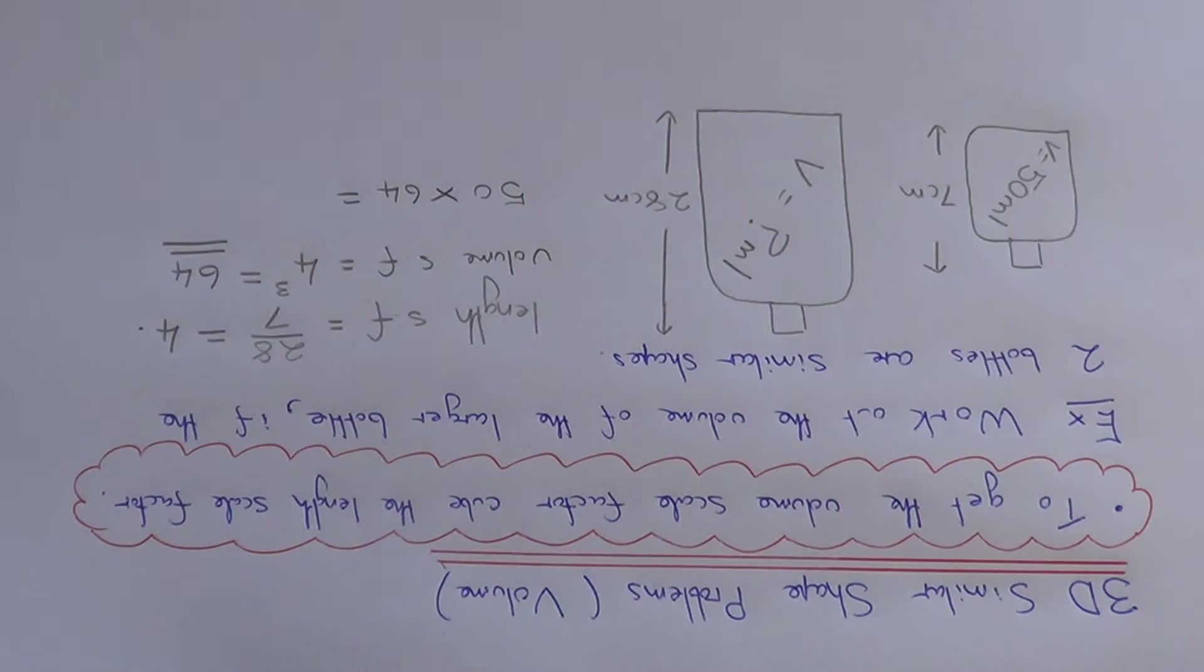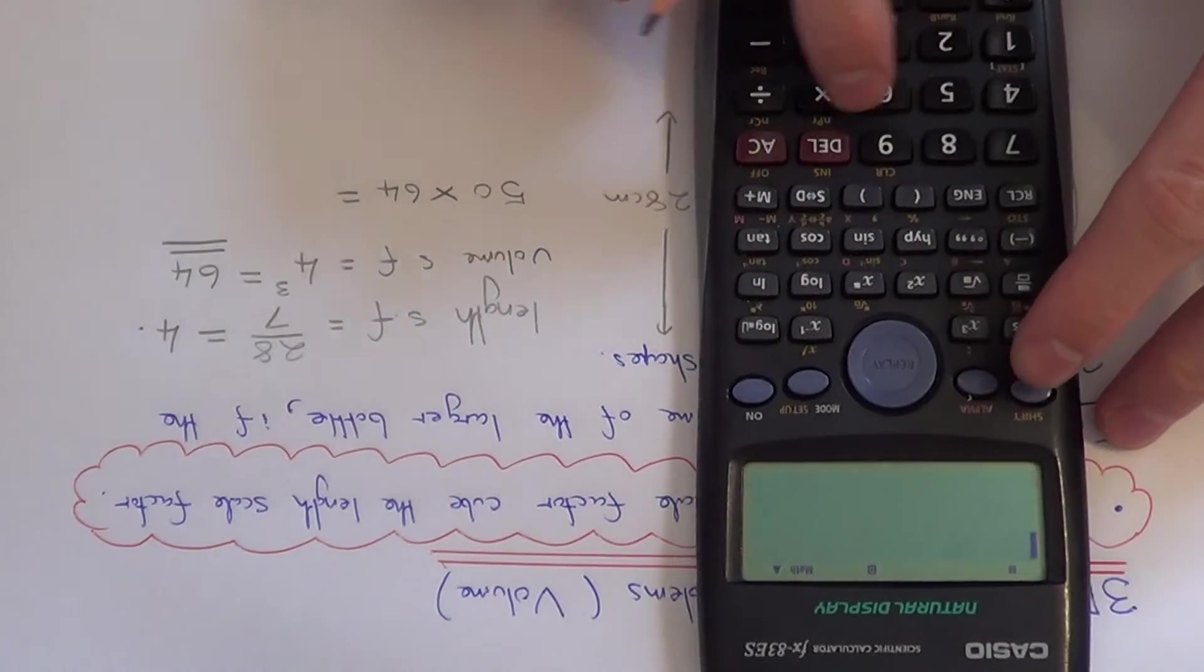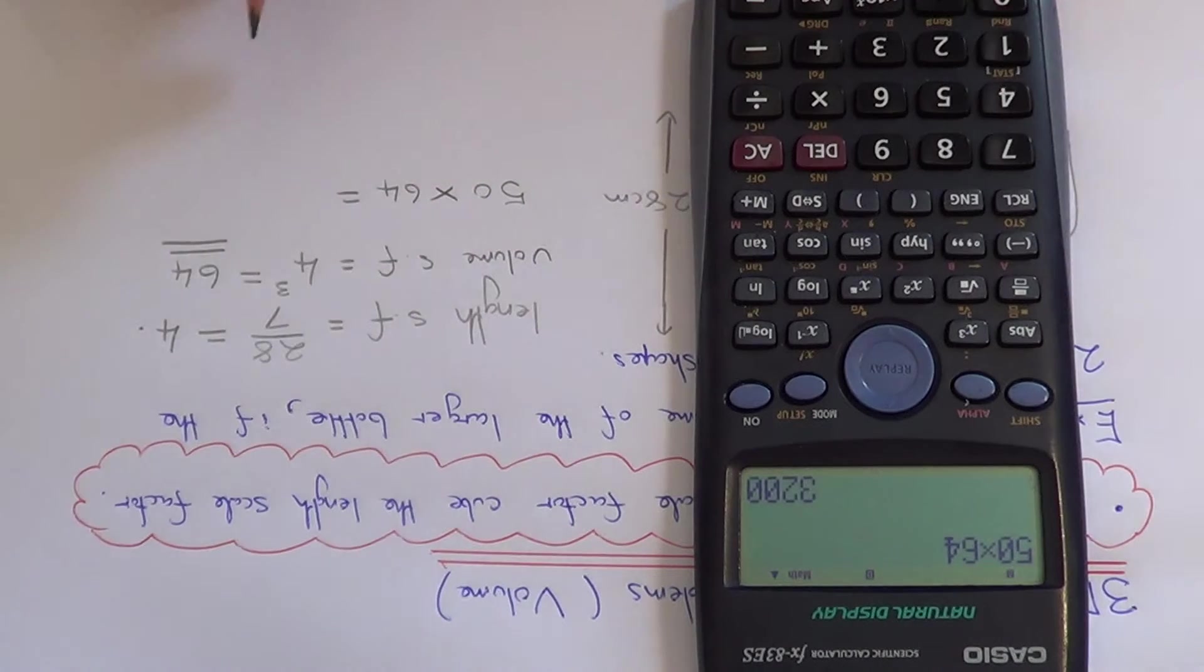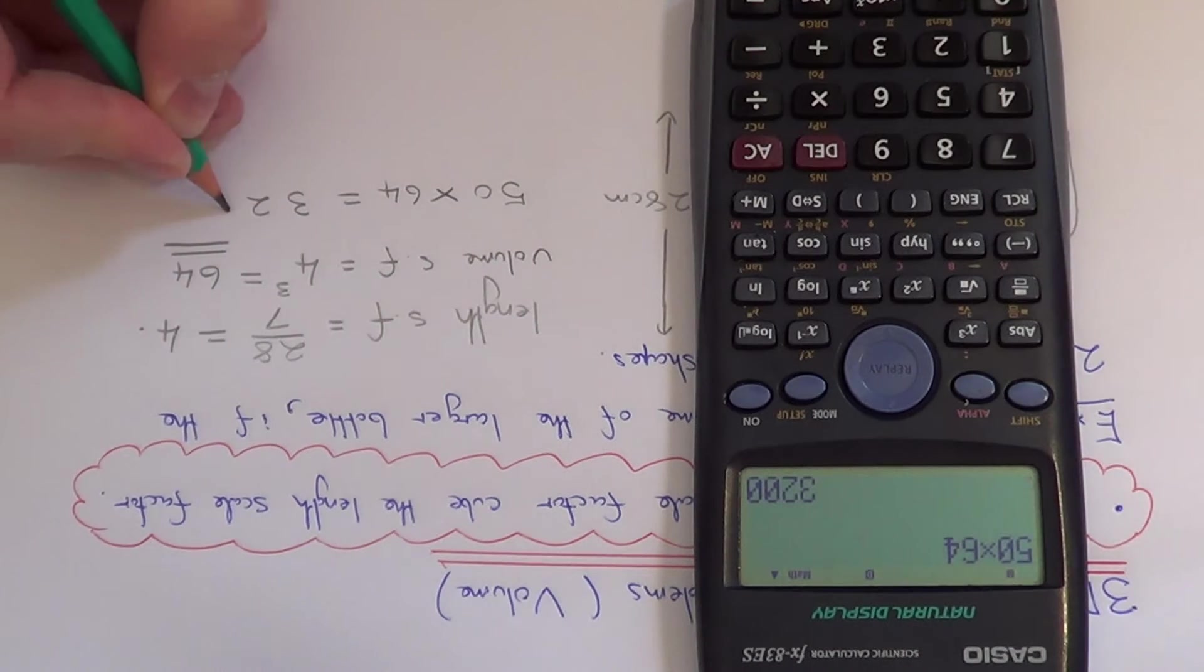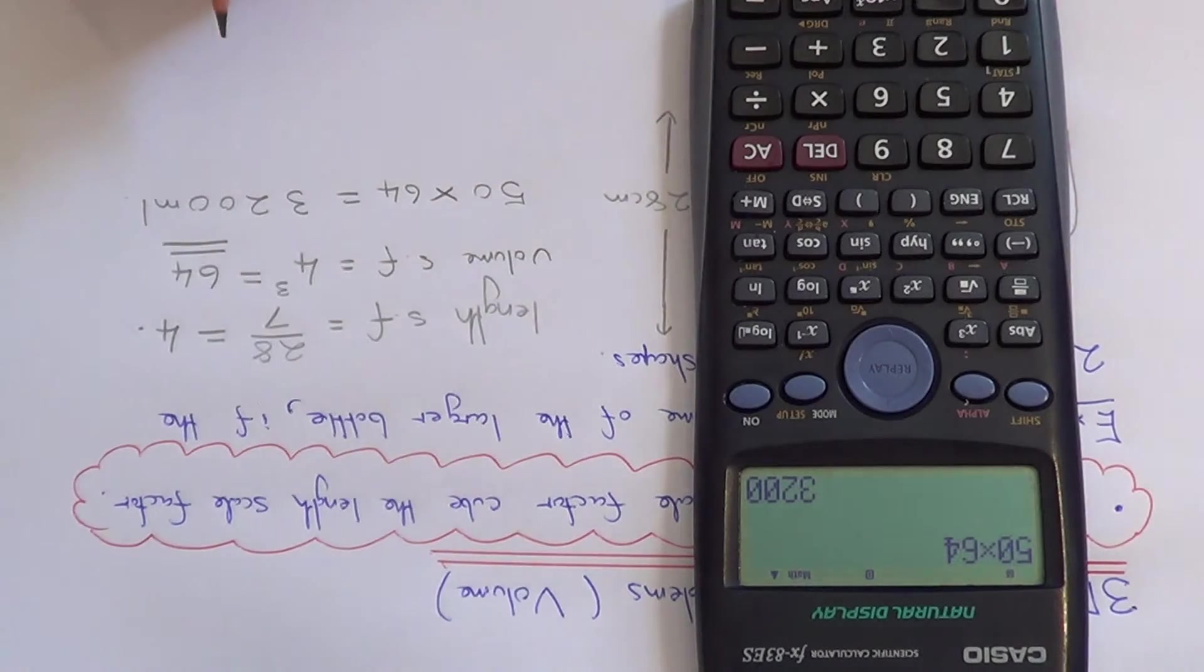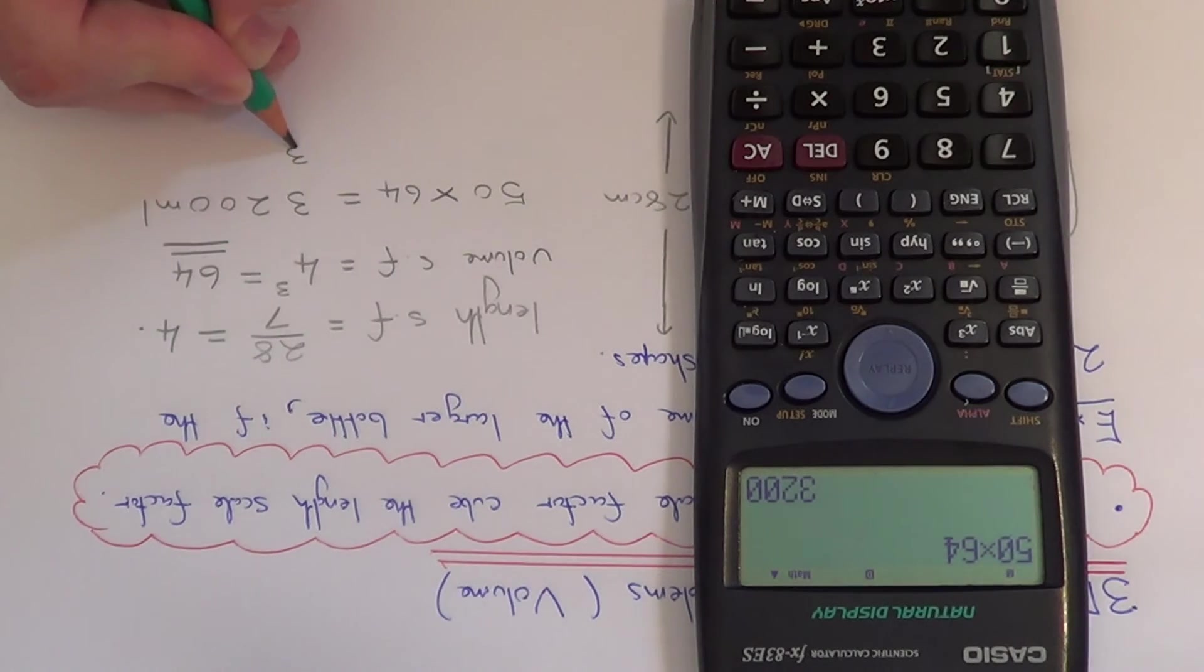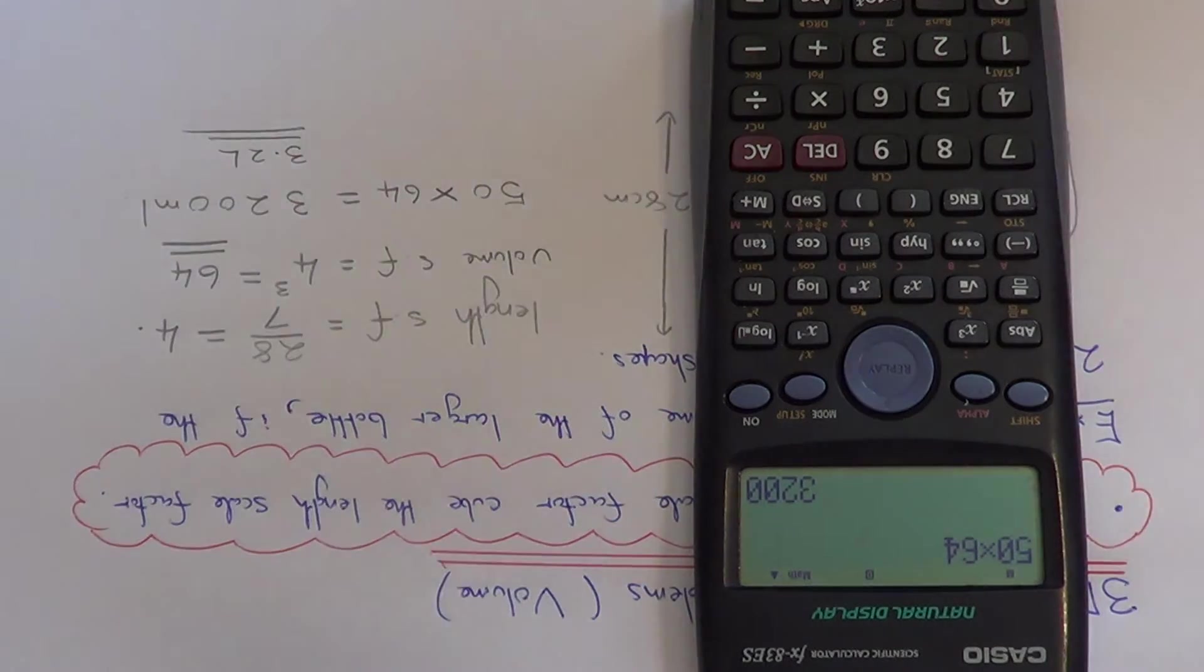So 50 times 64 will be 3200 ml or we can write this in liters as 3.2 liters. Thanks for watching.